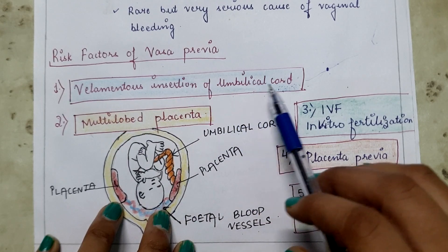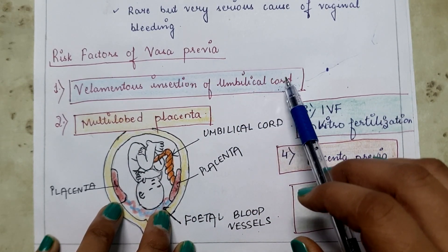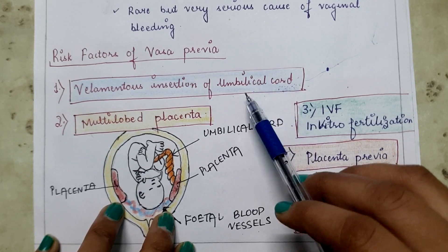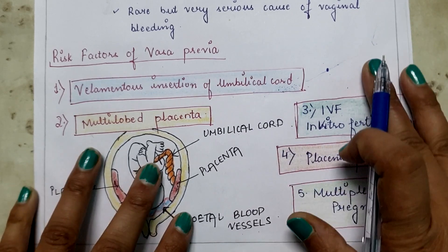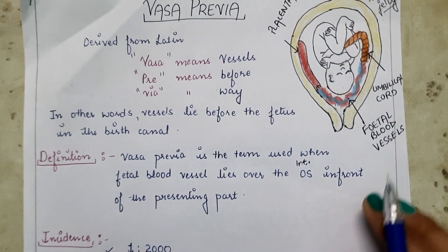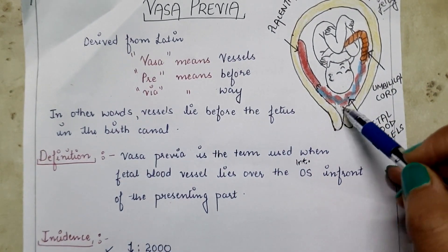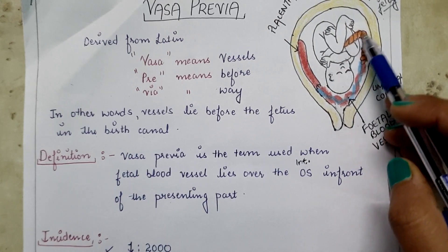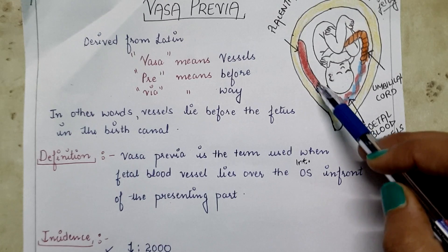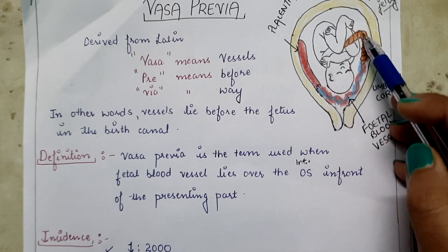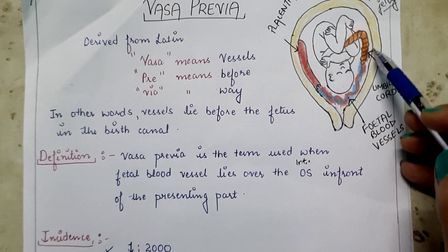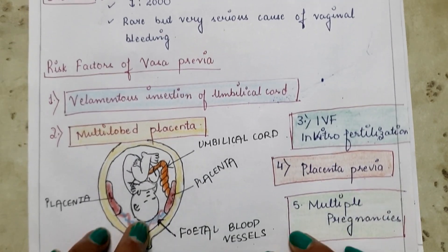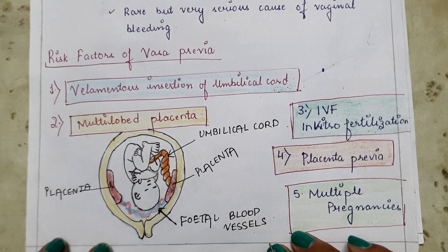The first risk factor is velamentous insertion of the umbilical cord. Normally the umbilical cord is attached to the center of the placenta, but in this case the umbilical cord is attached to the fetal membranes. As you can see in this diagram, the fetal blood vessels are attached to the placenta but the umbilical cord is attached to the fetal membranes, making this a risk factor for Vasa Previa.